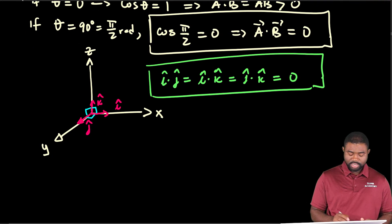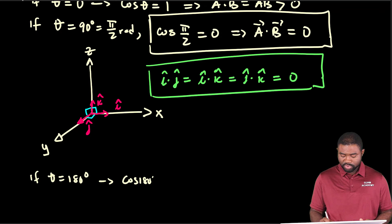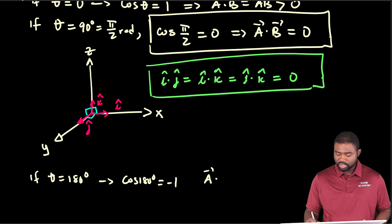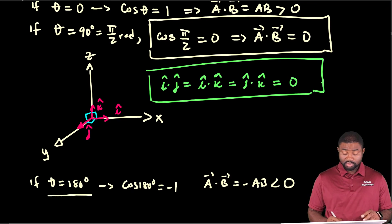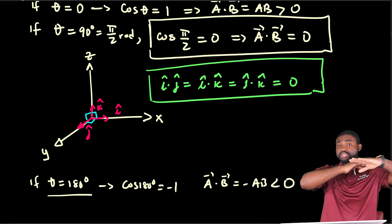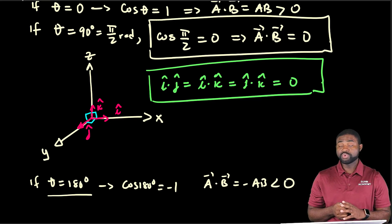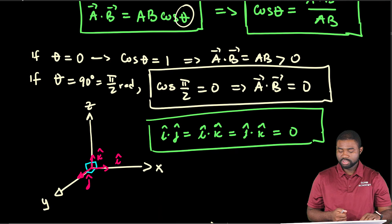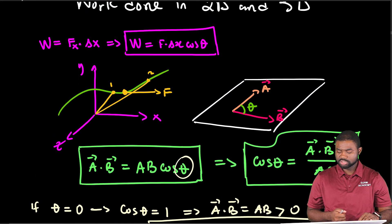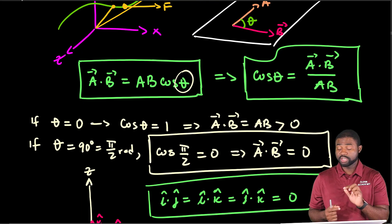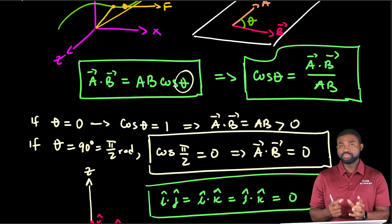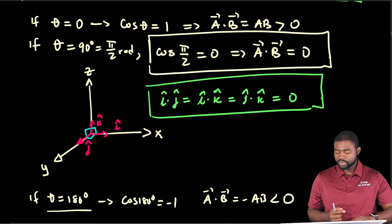The last case: if theta equals 180 degrees, the cosine of 180 degrees is negative one, therefore a dot b equals negative ab, which is less than zero. This only occurs when the two vectors are anti-parallel — for example, a pointing to the right and b pointing to the left. When two vectors point in opposite directions, the dot product is negative. This is some of the mathematical toolbox needed to calculate work done in two dimensions.